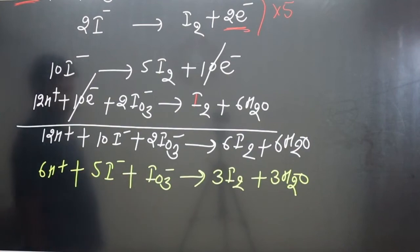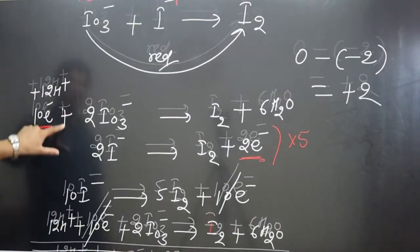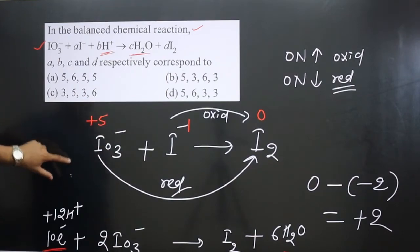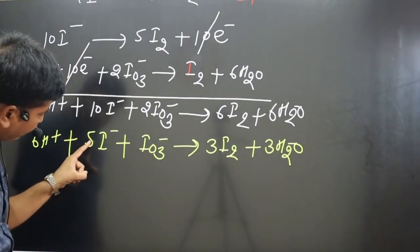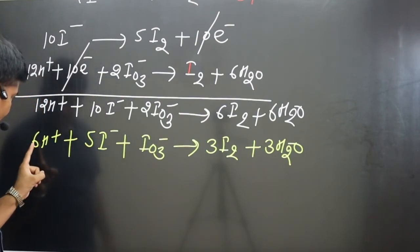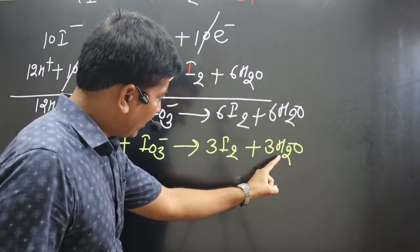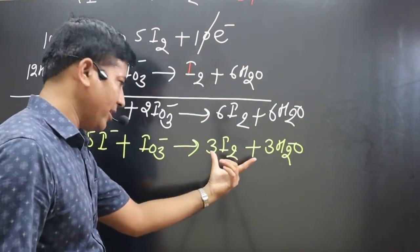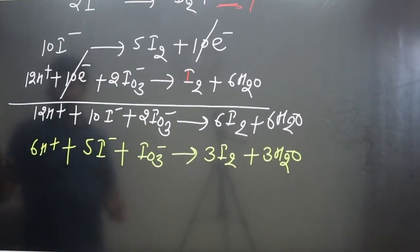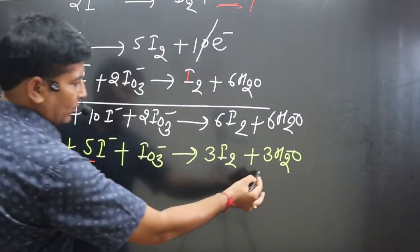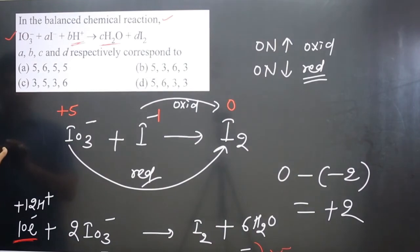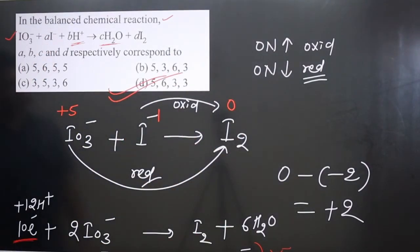This is the balanced equation. Looking at the original question order — iodate ion IO₃⁻, then H⁺, then water, then iodine molecule — the coefficients are: IO₃⁻ is 1 (implied), iodide I⁻ is 5, H⁺ is 6, H₂O is 3, and I₂ is 3. So the ratio A, B, C, D is 5, 6, 3, and 3. Therefore, Option D is correct.